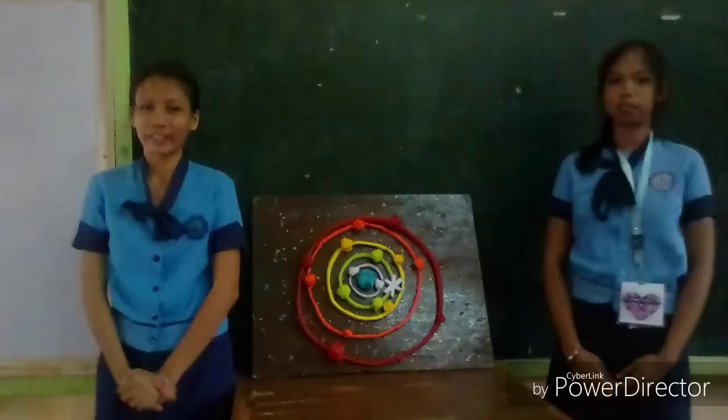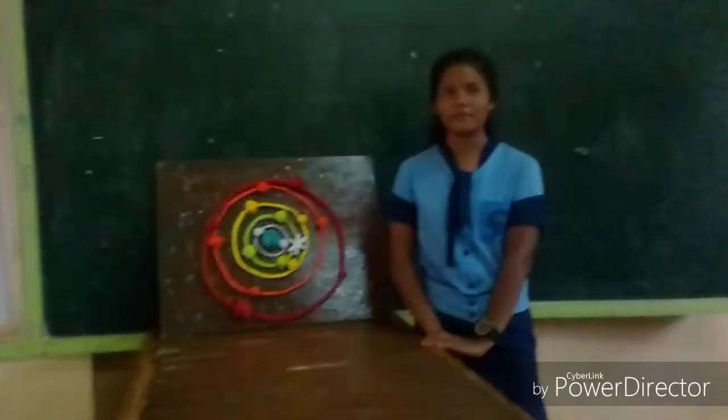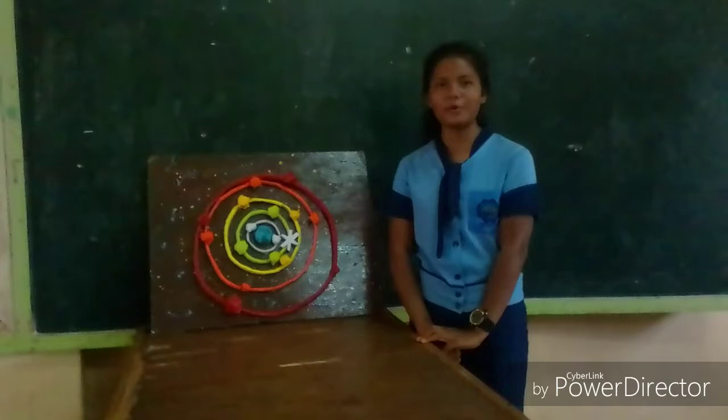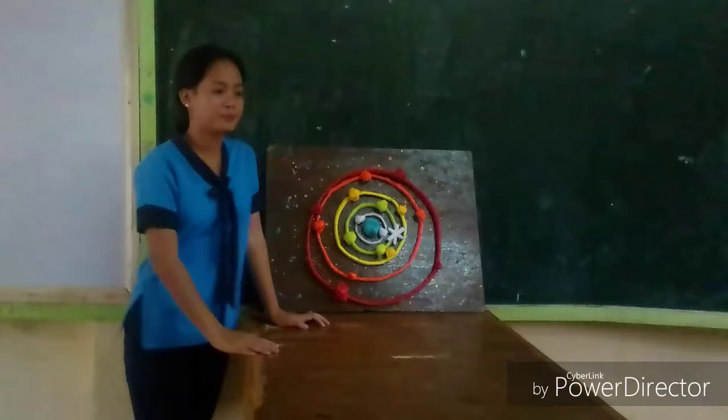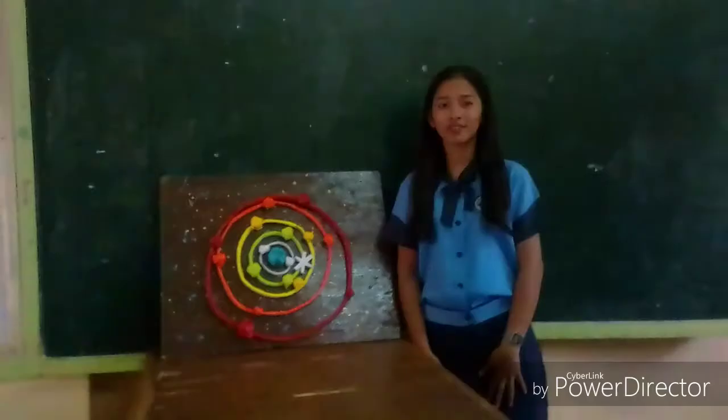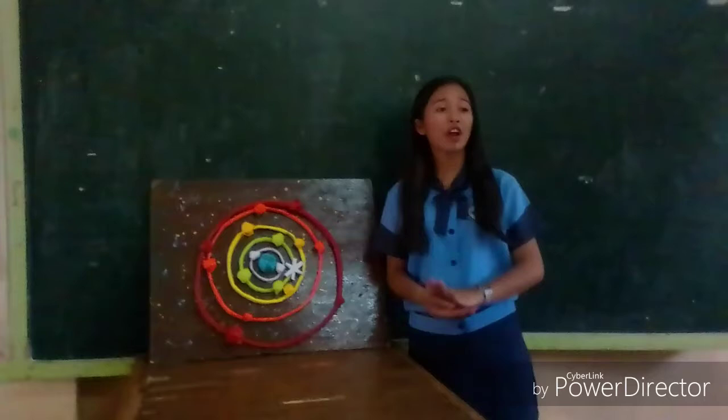Three: all celestial motion is regular. Four: the center of the planet and celestial motion is the center of each motion. Five: the center of all celestial motion is the center of the universe.